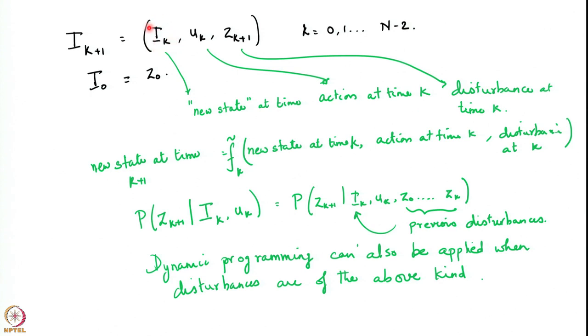The state space at time k is the space of all possible information vectors up until time k — that is, the set of all observations up until time k and all the actions that could have been taken. At time k+1, there is an additional observation and an additional action taken by that time.